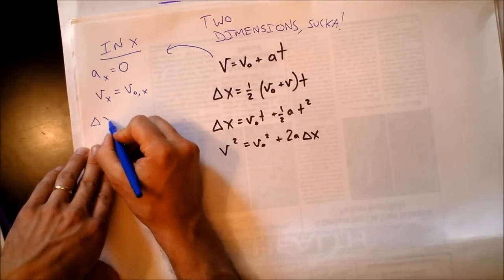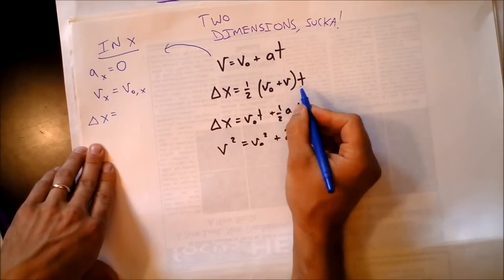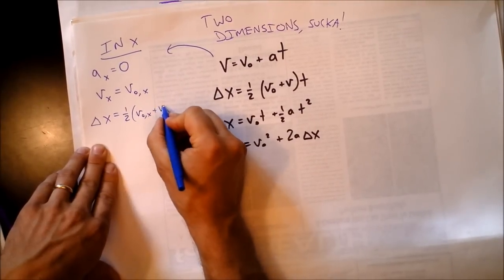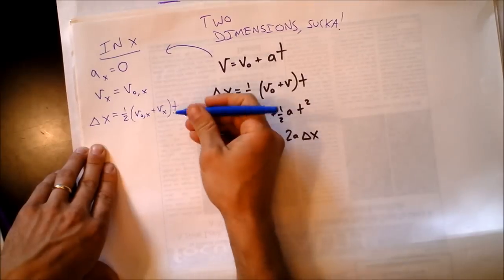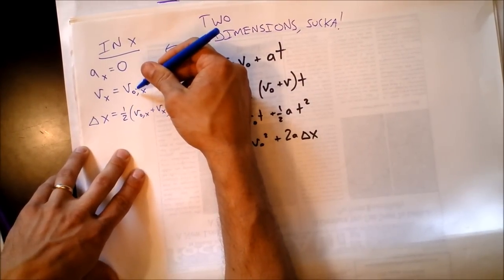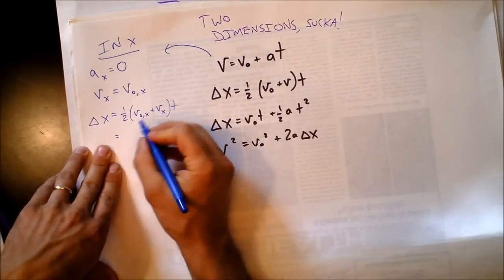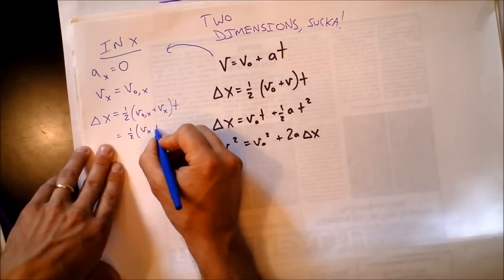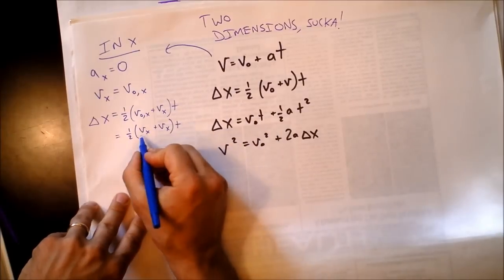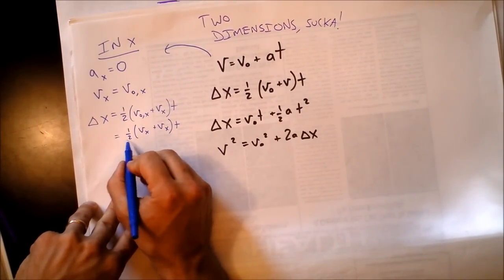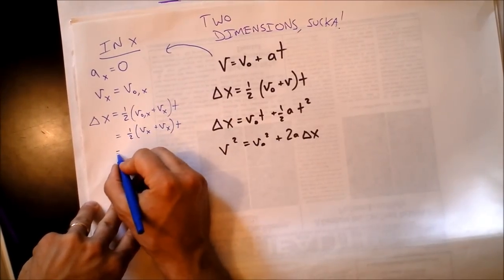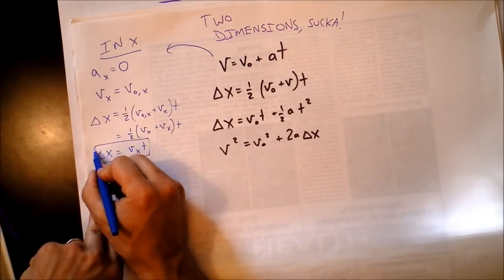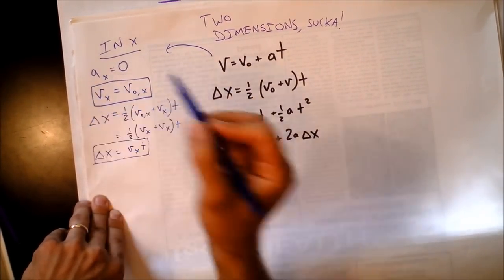For the definition of average velocity in the x direction: displacement equals one half times (initial velocity in x plus final velocity in x) times t. But since initial velocity in x equals final velocity in x, this simplifies to one half times two times v_x times t, which is just v_x times t. Displacement equals velocity in the x direction times time.